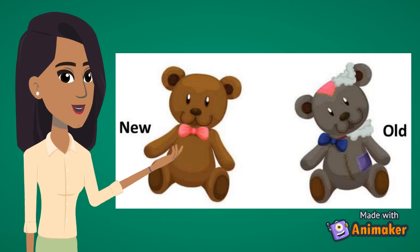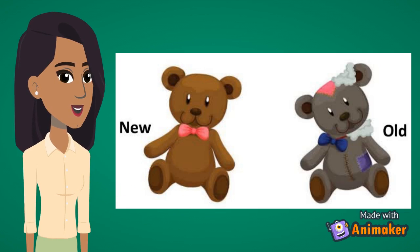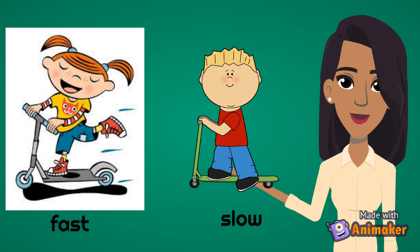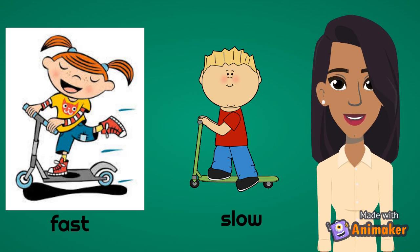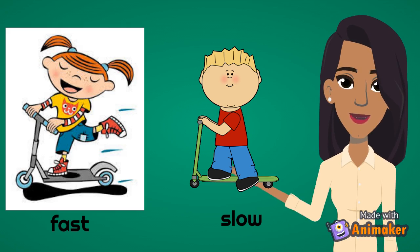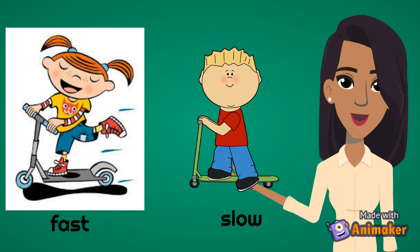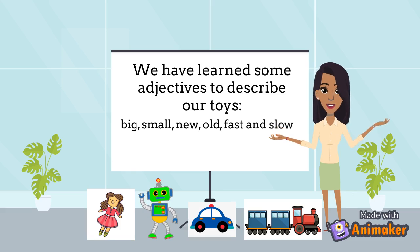And an old teddy — the gray one. New and old. Finally, observe the picture: we've got two scooters. The girl has got a fast scooter and the boy has got a slow scooter. We have learned some adjectives to describe our toys.